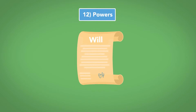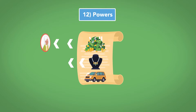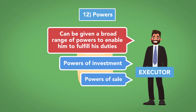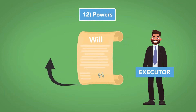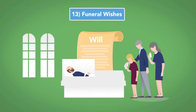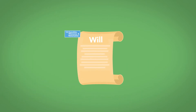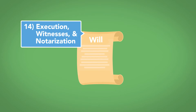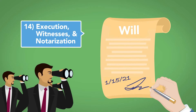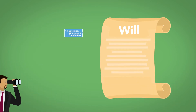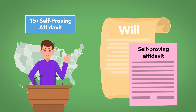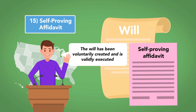Number 12: Powers. Since one of the main purposes of the will is to provide for administration of the probate estate, including payment of creditors and distribution of assets, an executor can be given a broad range of powers to enable him to fulfill his duties, such as powers of investment and sale. These powers may be listed in detail or incorporated into the will by reference to a comprehensive list in the state's probate statute. Number 13: Funeral Wishes. Some wills may specify funeral and organ donation wishes of the testator. Number 14: Execution, Witnesses, and Notarization. Although states' requirements for execution may differ, most wills must be signed and dated by the testator in her own handwriting, witnessed usually by two or three witnesses, and are often notarized as well.